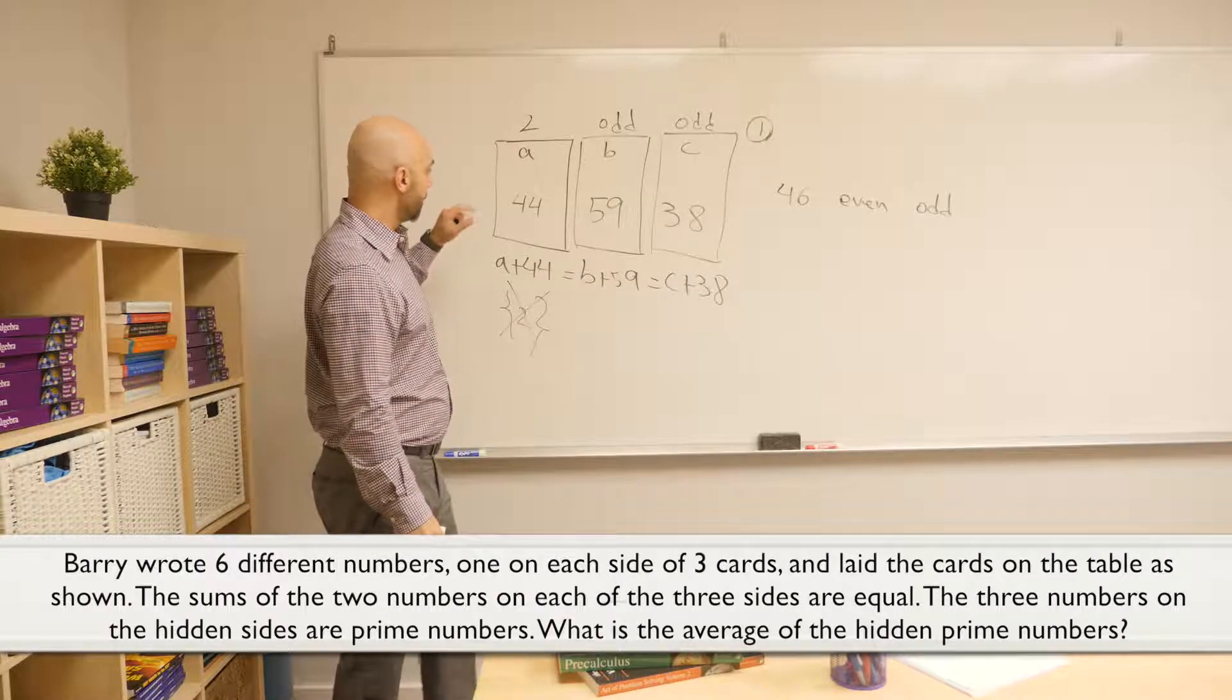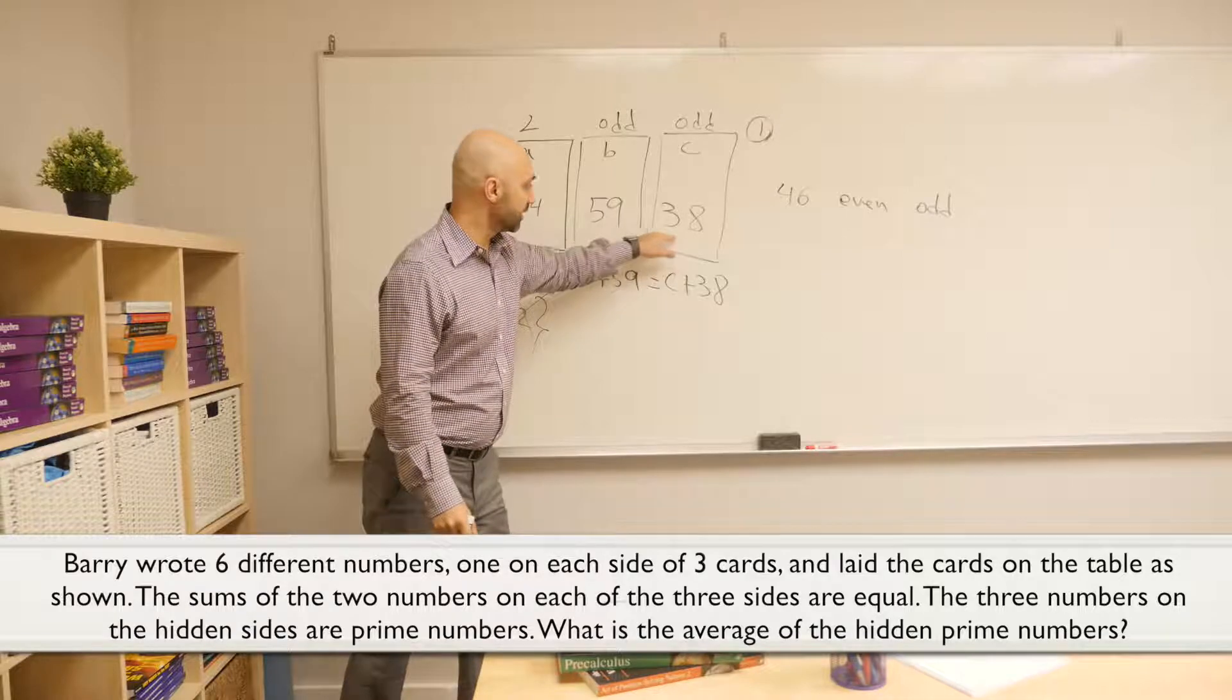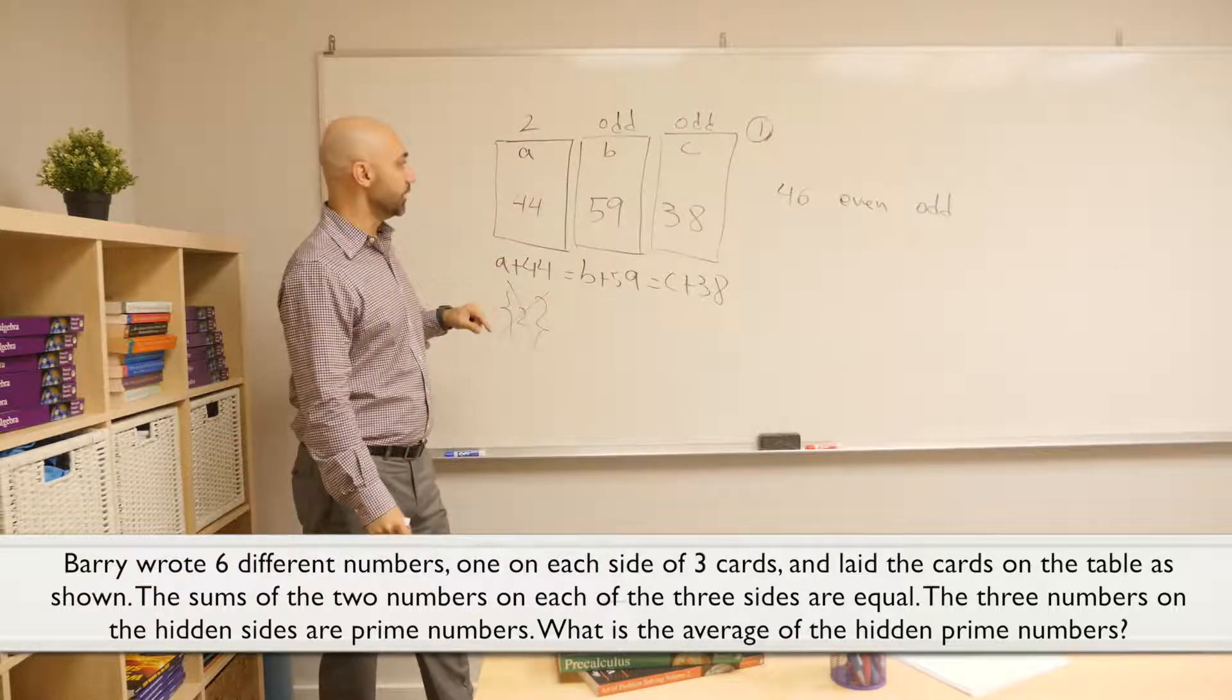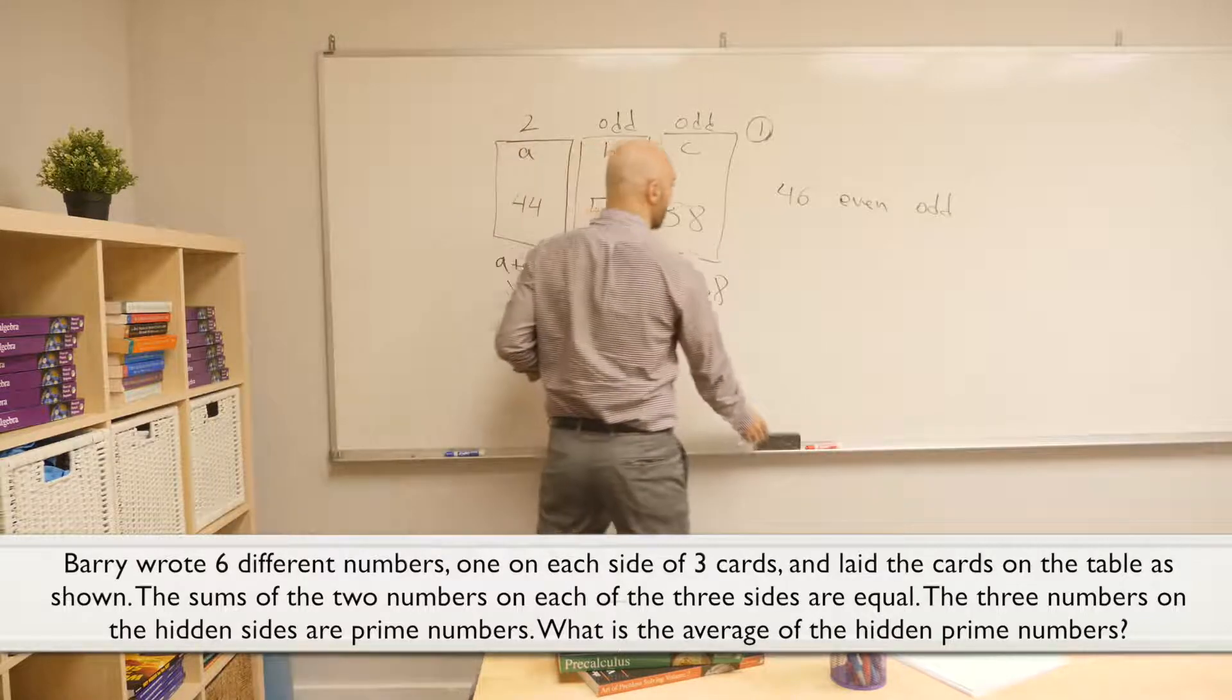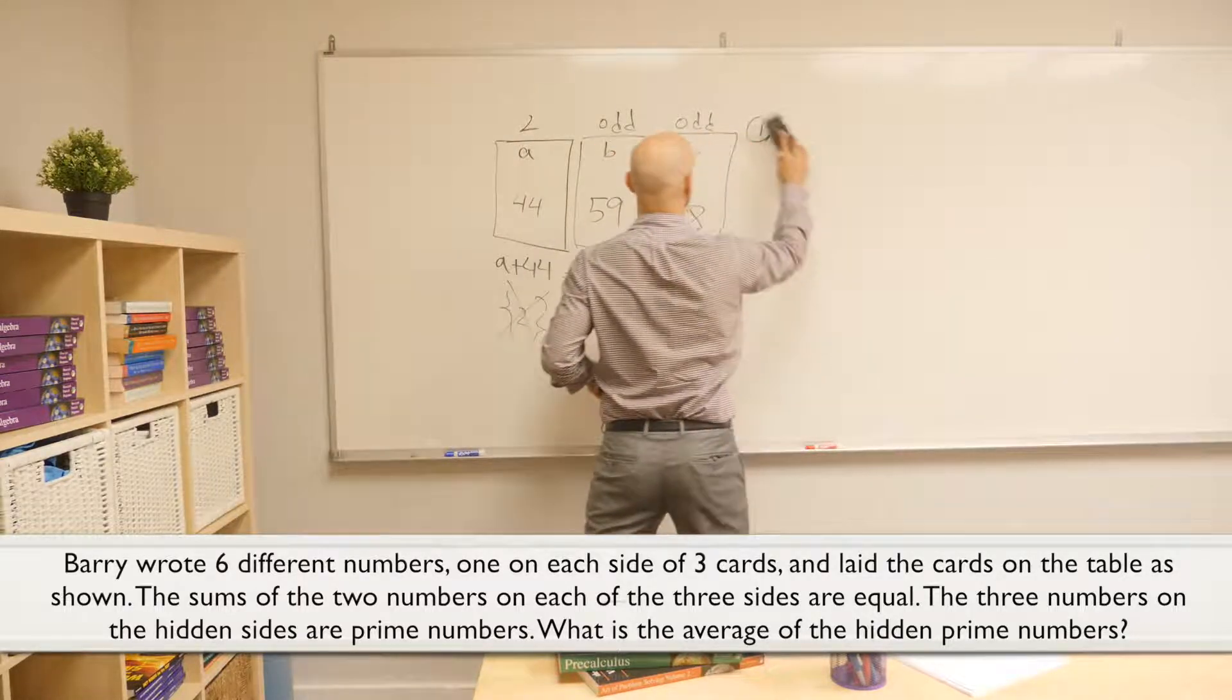But also, we cannot put two on the last card because 38 and 44 are both even, and we'll repeat the same situation. So the only place left for number two is the middle card.